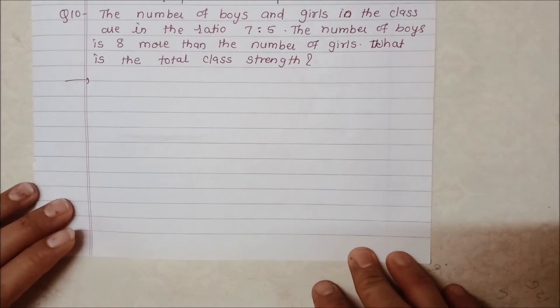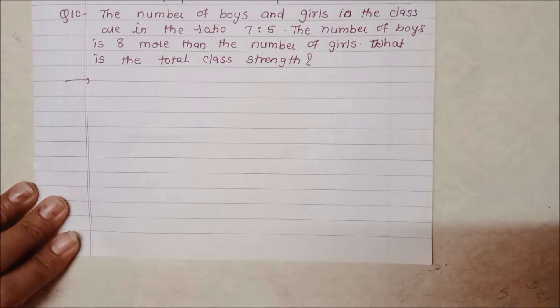The number of boys is 8 more than the number of girls. Boys which are 8 more in comparison of girls, 8 boys is more in the ratio. So we need to find out what total strength is in class, right?